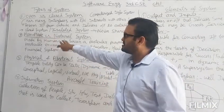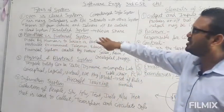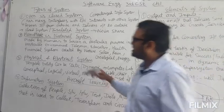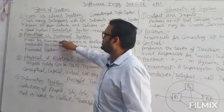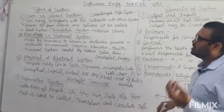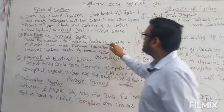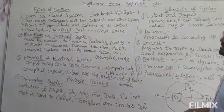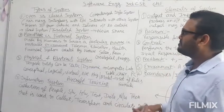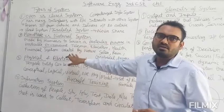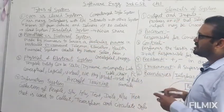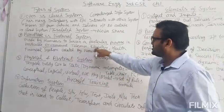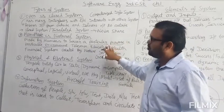The second category is man-made versus natural system. Man-made means a system which is made by humans to serve a particular purpose in a particular environment. For example, we have a telecommunication system, an educational system, a health system, or a financial system.